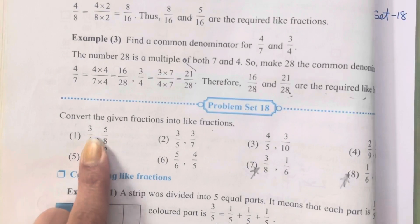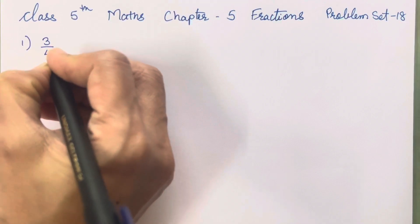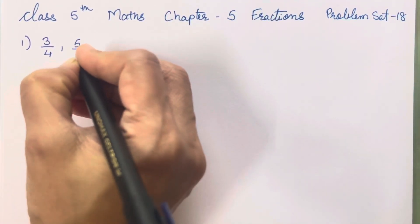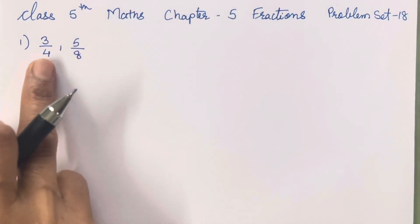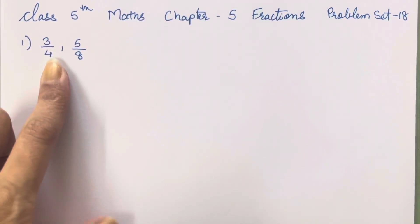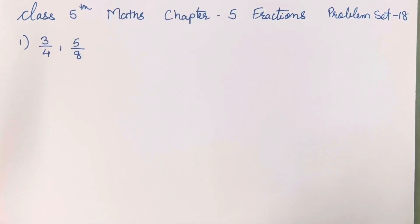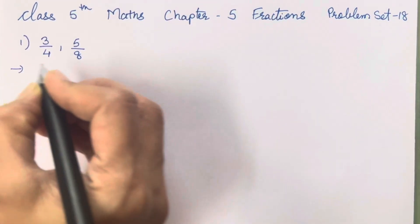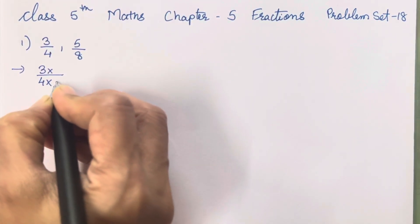Now the first one is 3 upon 4 and 5 upon 8. Now over here we don't need to change both the numbers. If 4 ko hamne 2 se multiply kar liya, then we are going to get 8 only, isn't it? So that is the only thing that you all have to solve over here. So 3 into and 4 into what? 2.